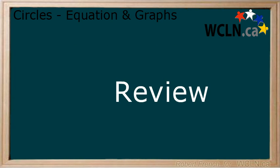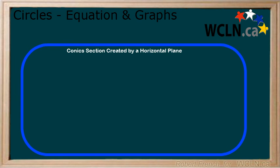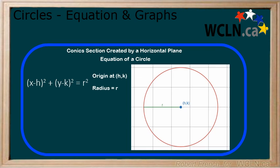In this lesson, you learned about the equation and graphs of the conic section generated by a horizontal plane, also known as a circle. That the equation of this can be written like this, where the origin of the circle is at (h,k) and it has a radius of r. Therefore, the circle can be graphed using this information.